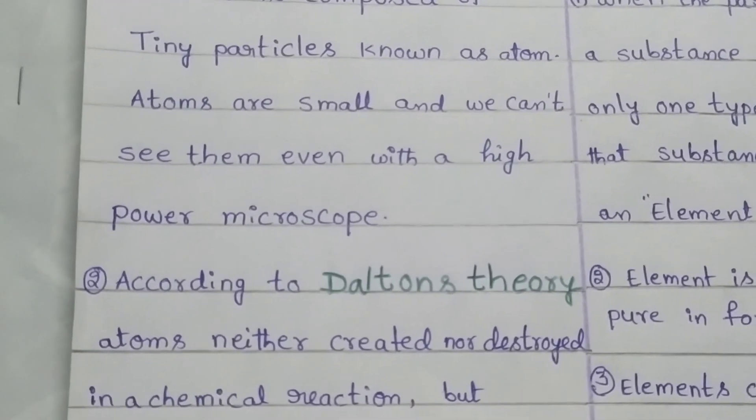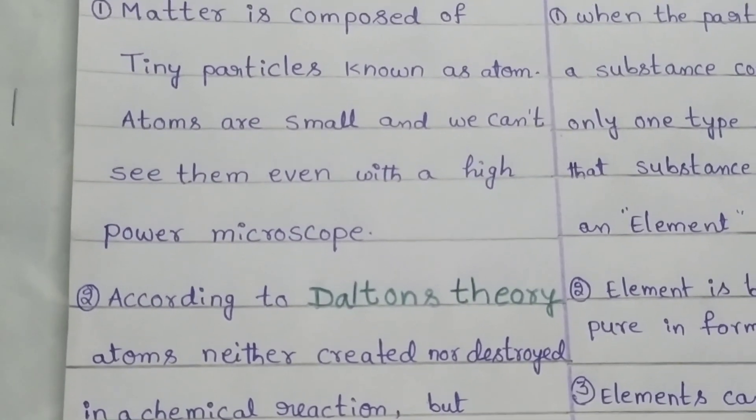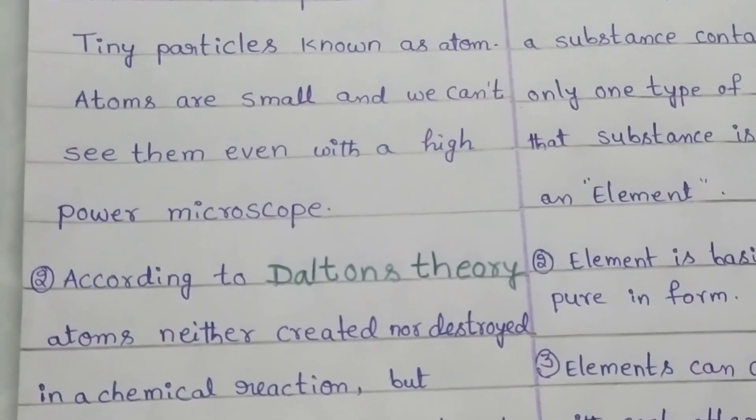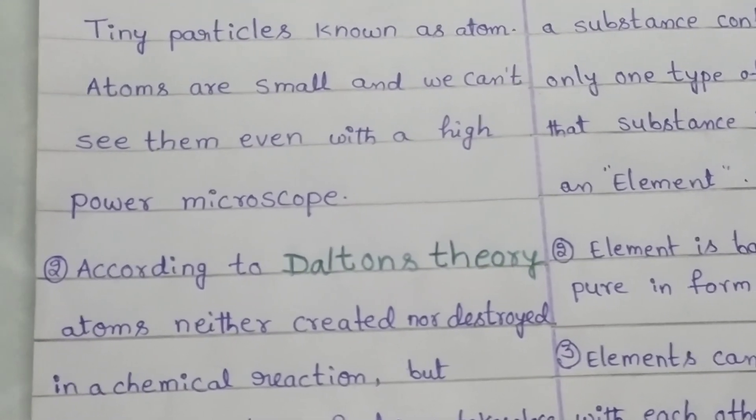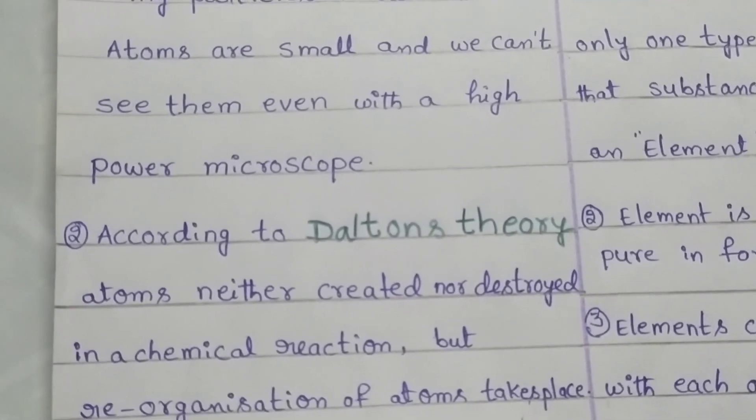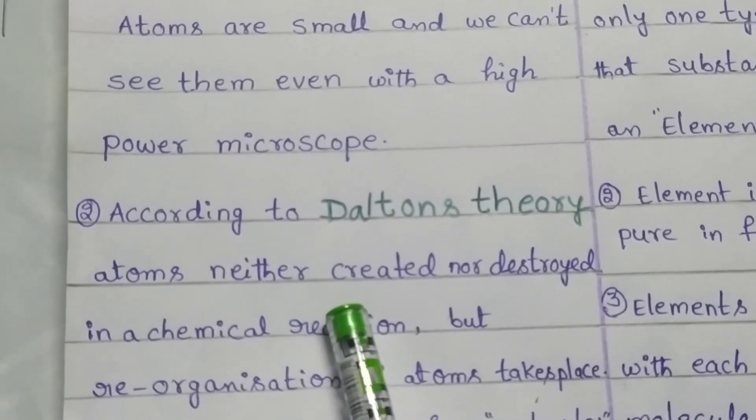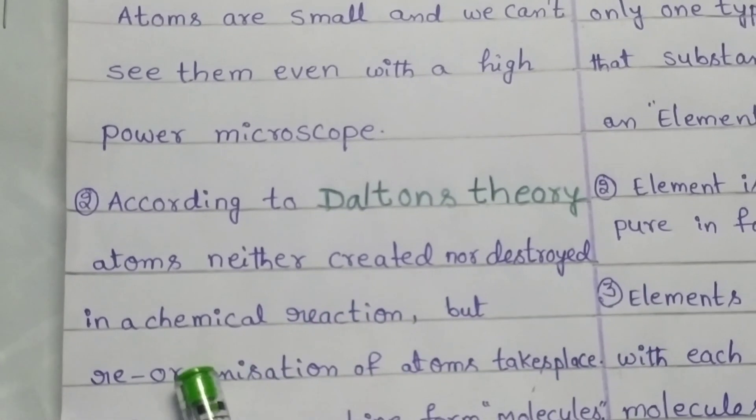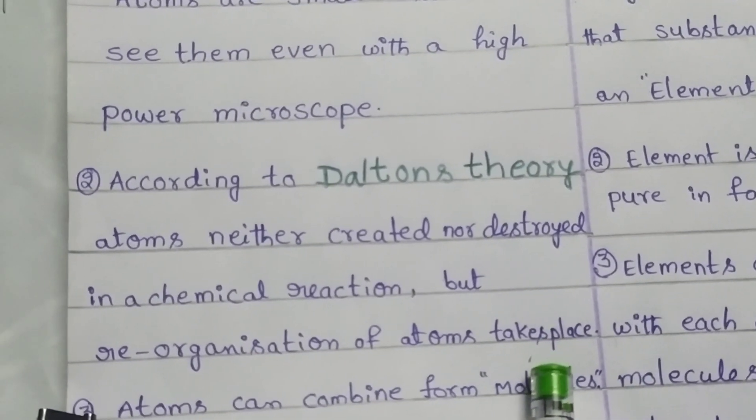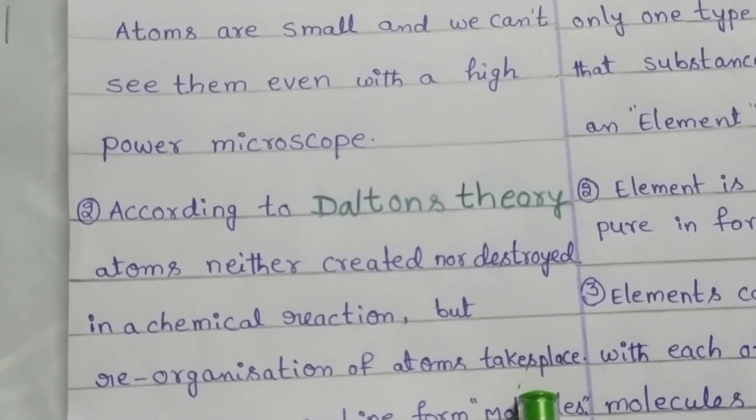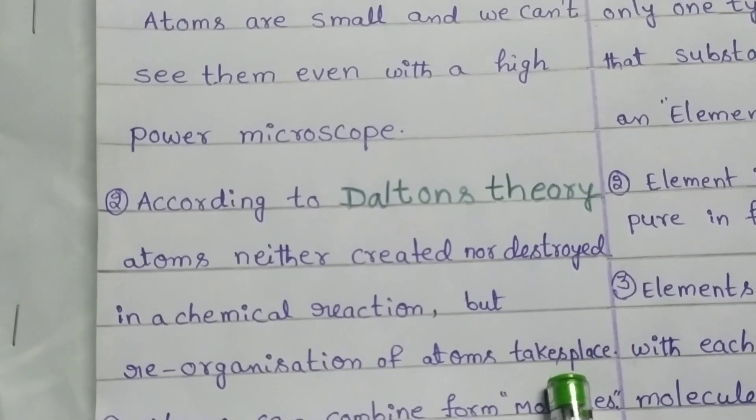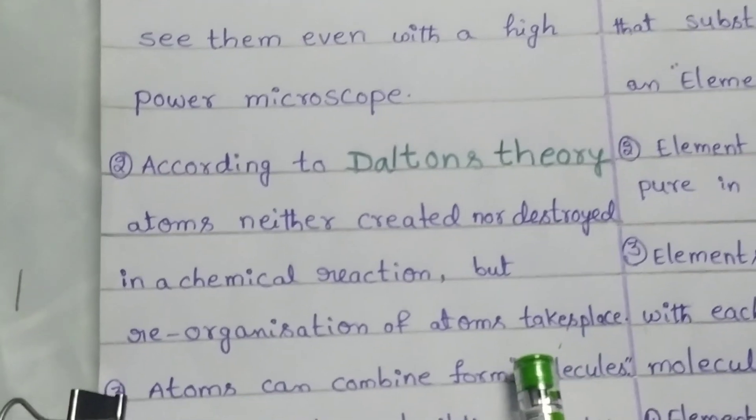According to Dalton's theory, the atoms cannot be divided. They are the smallest particles in the universe. Later, further scientists clarified that the atom is also subdivided into three parts. According to Dalton's theory, atoms are neither created nor destroyed in a chemical reaction, but reorganization of atoms takes place. That means we cannot create or destroy the atoms, but reorganization takes place during the chemical reaction.